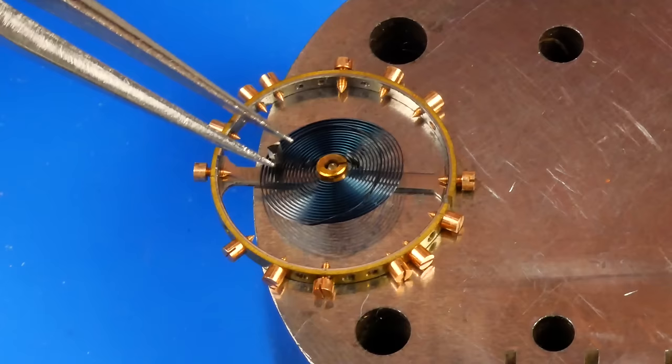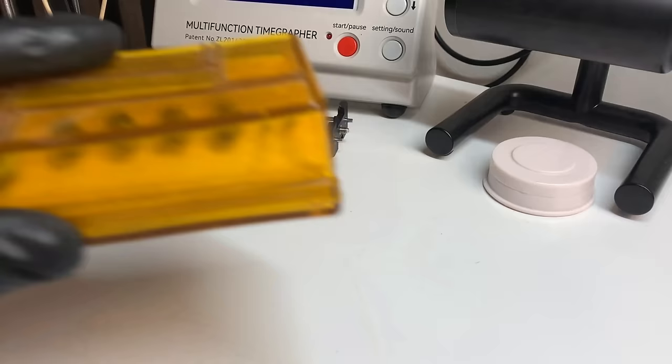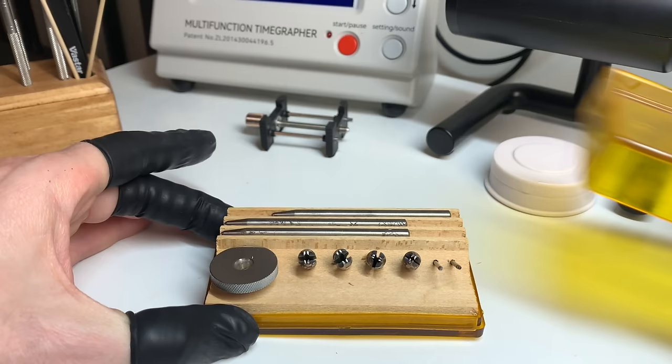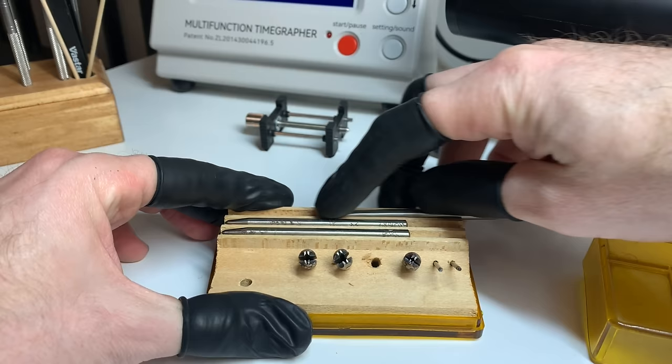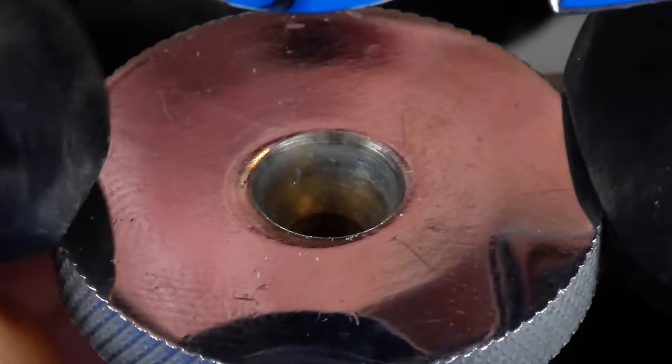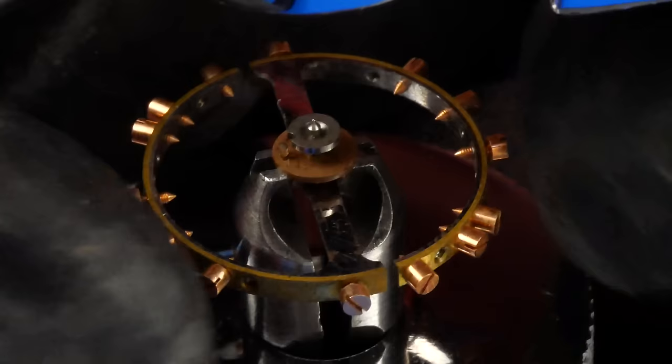On to that broken balance. First, the hairspring collet is levered off of the staff. This balance features a double safety roller, which means I got to use my trusty Rex roller remover tool. These angry beaver teeth do a fine job at securing the balance at the hub, while the staff is punched free of the roller, which comes off in two parts.